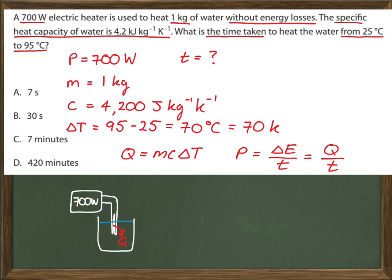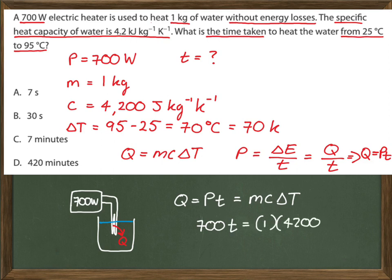So I'm going to write my formula here. Q equals, well, from this, Q is equal to P times T. So that's what I'm going to write. Q is equal to P times T, and let that equal mC delta T. Now, from there, I have power is 700 watts times T is equal to 1 times 4,200 times delta T, which is 70. And if I work all that out and simplify it, I should get a time of 420 seconds.